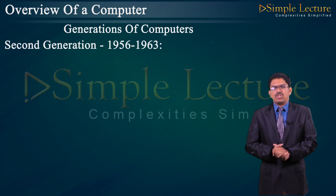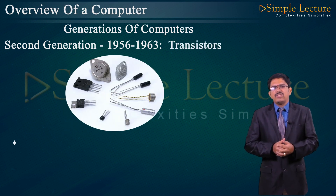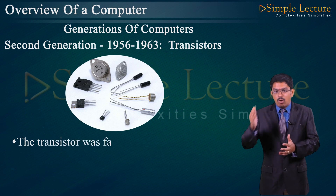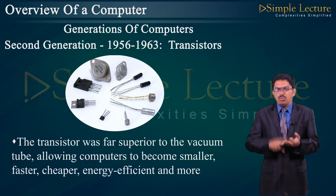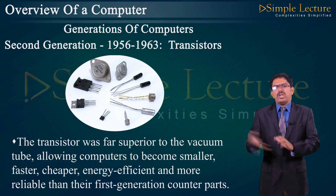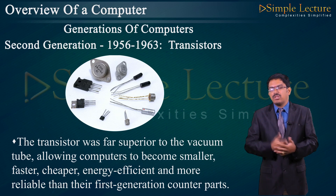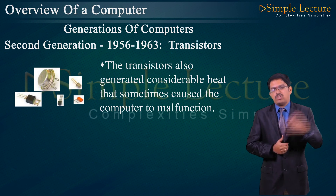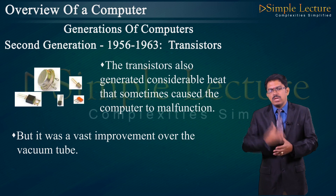Classic examples of first generation computing devices are UNIVAC (Universal Automatic Computer) and ENIAC (Electronic Numerical Integrative and Calculator). Second Generation (1956–1963): transistors replaced vacuum tubes. Transistors were far superior to vacuum tubes, allowing computers to become smaller, faster, cheaper, energy-efficient, and more reliable than first generation counterparts.